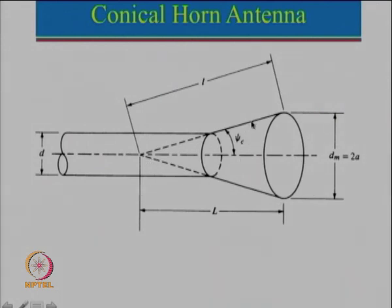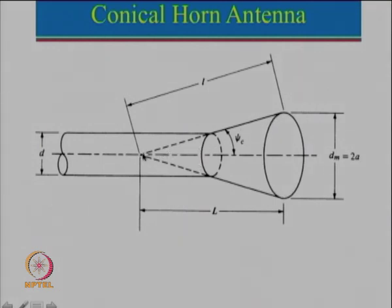In this particular case the phase center will be only one, whereas in the case of pyramidal horn antenna the phase center for E-plane as well as for H-plane are at slightly different positions. But here there is one common point - if you just extend this dimension it meets at one particular point. This is the length, this is the slant length, and that is the diameter.